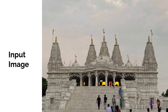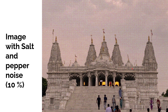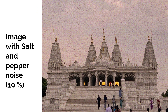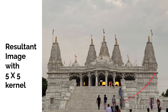We have this image where salt and pepper noise of 10% has been added. When we implement a median filter with a 5×5 kernel, the resultant image has no noise — we completely removed the salt and pepper noise. The original image and the filtered image have only a slight difference in sharpness.